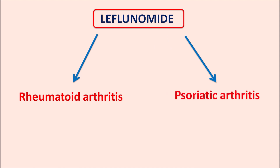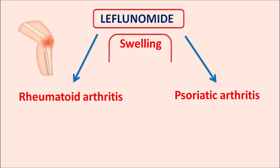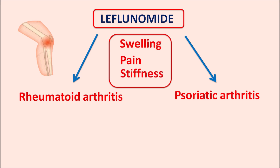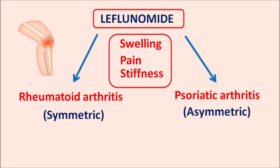Both rheumatoid arthritis and psoriatic arthritis are associated with similar symptoms such as swelling, pain, and stiffness of the joints. However, a difference exists between the two conditions. In rheumatoid arthritis, joints on both sides of the body are affected, making it a symmetrical joint disorder. In psoriatic arthritis, joint stiffness and pain are observed only on one side of the body, making it somewhat asymmetric in nature.